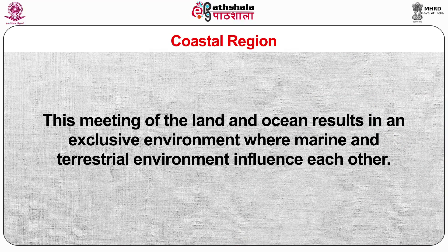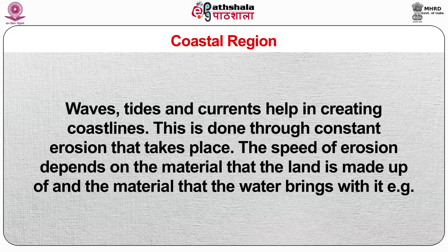The meeting of the land and ocean results in an exclusive environment where marine and terrestrial environments influence each other. Coastline is the narrow strip where coastal water and land come in contact with each other. Water, waves, tides and currents help in creating coastlines through constant erosion. The speed of erosion depends on the material that the land is made up of and the material that the water brings with it. For example, the coastal area of Rio de Janeiro, Brazil, mostly comprises hard materials like quartz and granite.